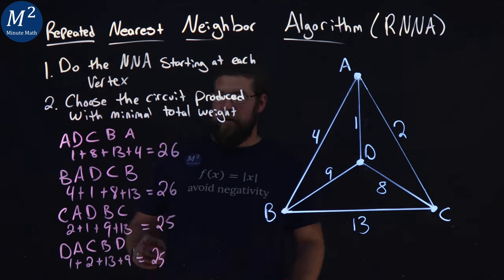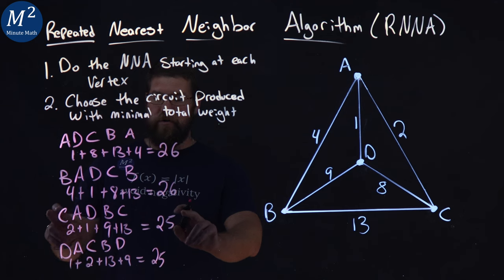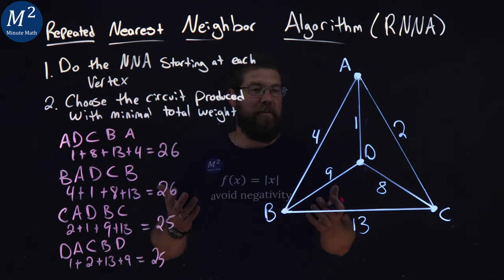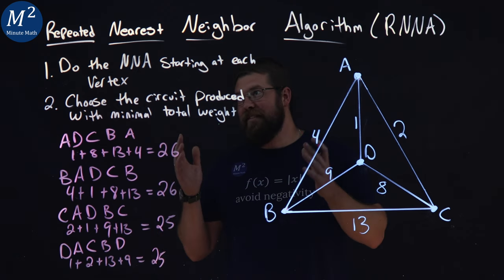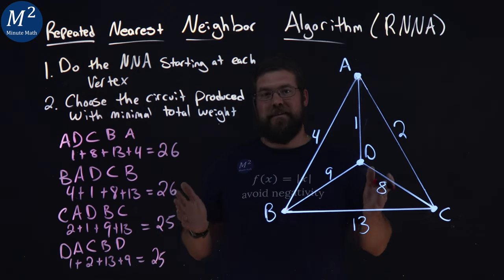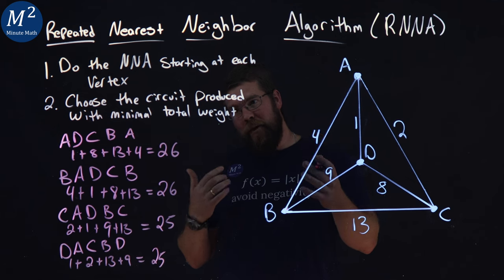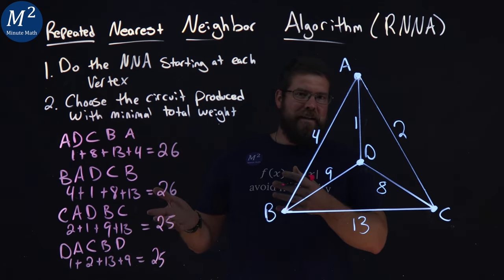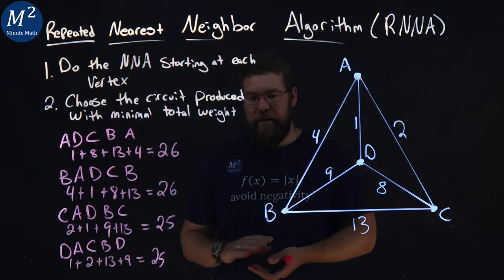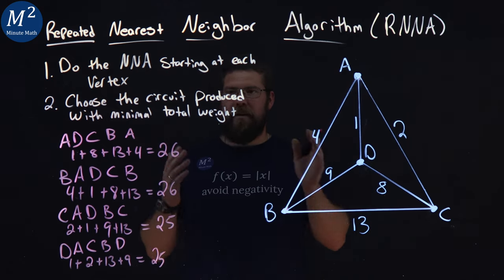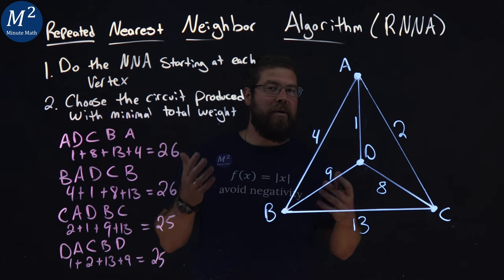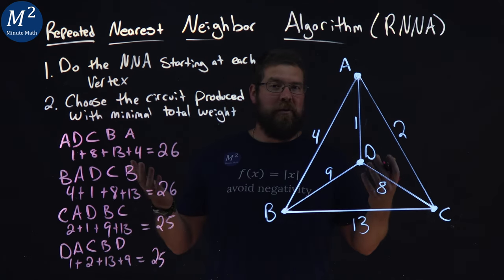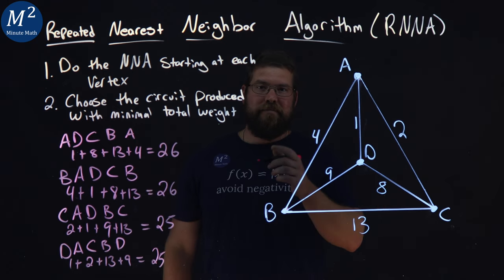So we have two here, two circuits that have the same weight of 25 and two are 26. And I still don't think that's the most optimal way. This doesn't always find the best circuit, but it's the method and something you can follow, a computer can follow to find a circuit here, a Hamiltonian circuit, and it can help you find a lower weight. It doesn't always work, but that is the repeated nearest neighbor algorithm. I hope you learned about that. And as always, thanks for watching.